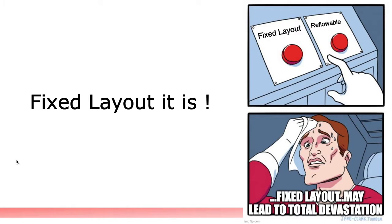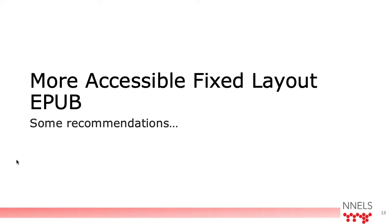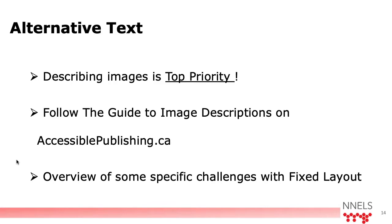Now that we know the accessibility limits of Fixed Layout and that we should use it only if necessary, we can continue safely. Let's imagine our book needs total layout control — how do we make sure it doesn't lead to total devastation in its accessibility? Here are some recommendations for more accessible Fixed Layout. The first key point is alternative text and image description. Fixed Layout publications usually have a lot of images, or consist entirely of images, so ensuring that the information conveyed by images is accessible to all readers is the top priority.